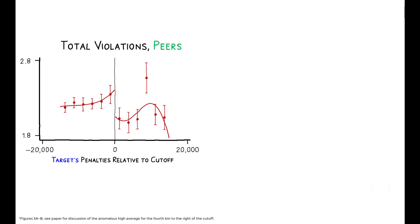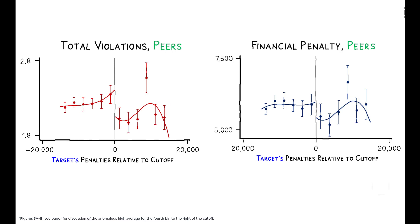The results show that publicizing the target facility's violations leads to substantial declines in non-compliance among its peers. To the right of the press release cutoff, peer facilities have a lower number of violations recorded and a lower amount of financial penalties levied following the target's inspection.